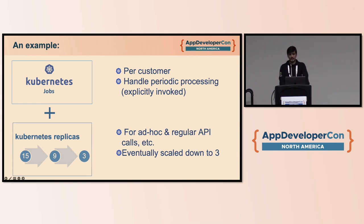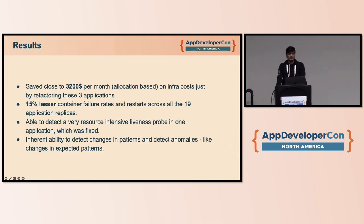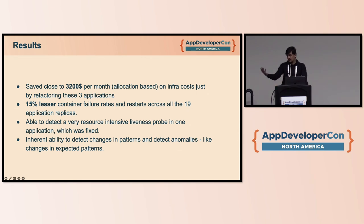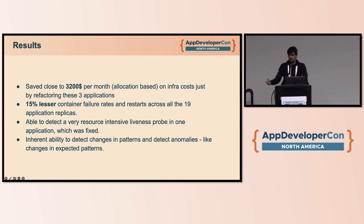The main results: we saved close to $3,200 across just three applications we tweaked — about 20% improvement in cost of goods sold for those services. We also realized 15% fewer container restart and failure rates across all those replicas. In addition, we identified a false positive seasonality that turned out to be a heavy resource-intensive liveness check, which we were also able to fix. And as a bonus, we got an anomaly detection system working, capable of detecting changes in patterns in real time.